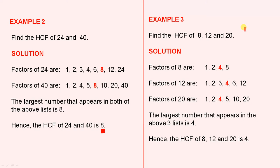Example 3: find the HCF of 8, 12, and 20. The factors of 8 are 1, 2, 4, and 8. The factors of 12 are 1, 2, 3, 4, 6, and 12.